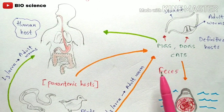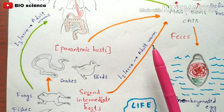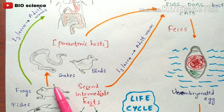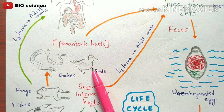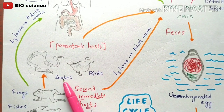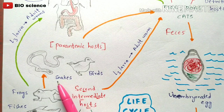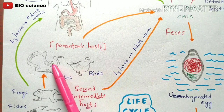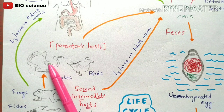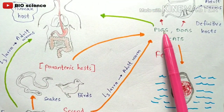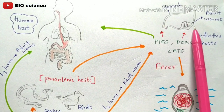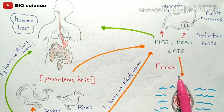There is another pathway: frogs and fishes are also consumed by snakes and birds. When this happens, the L3 larvae remain inactive but are infective — their numbers do not increase, but they remain totally infective. Once these snakes or birds are consumed by pigs and dogs, the L3 larvae show their effects and again develop into adult worms, releasing fecal material along with eggs.